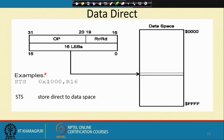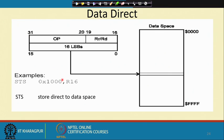Then data direct — you can use the STS instruction, store direct to data space. Here we have the opcode STS, the source register, and the destination. This address is a 16-bit address that is part of the instruction, and the R16 value will be copied onto that particular address. This is a 32-bit instruction, unlike the previous 16-bit instructions.